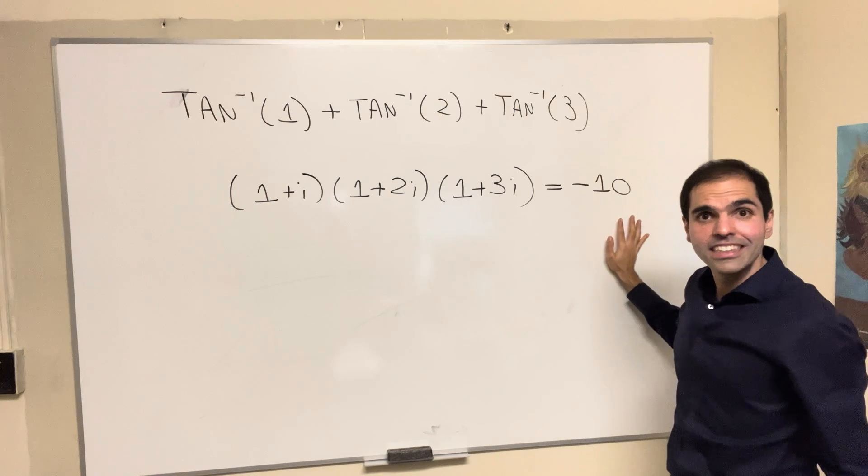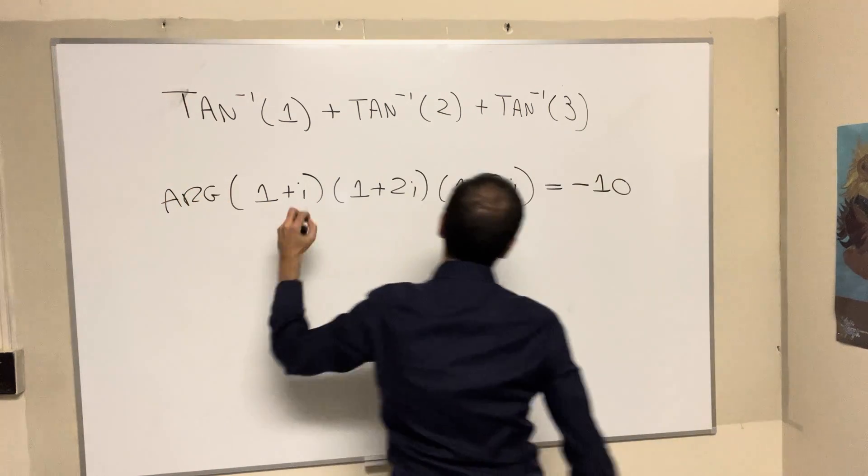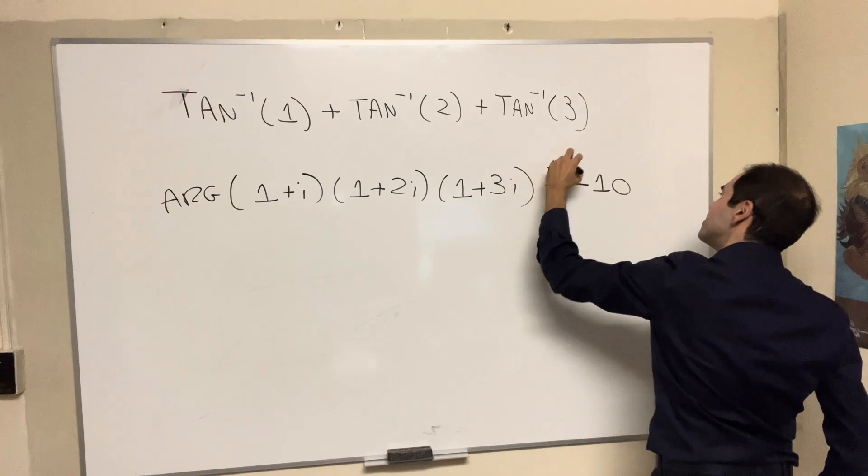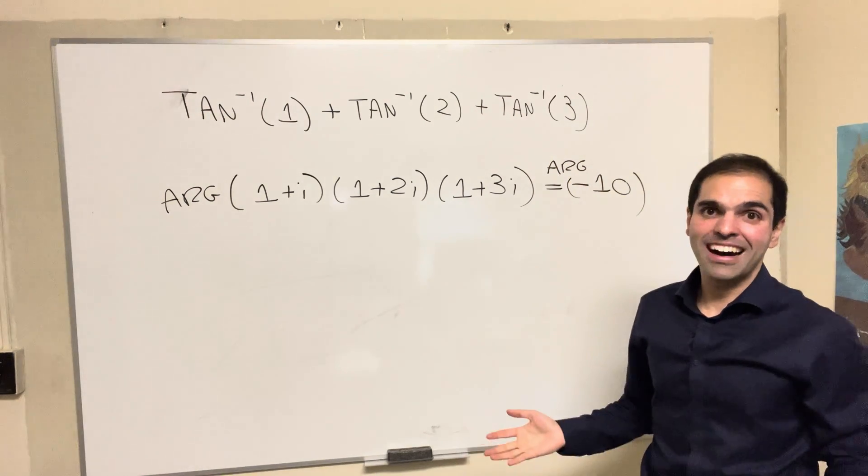Now, to destroy this identity, let's use arg. Argument. So argument of this is the argument of that, or as in German they say, for arg.